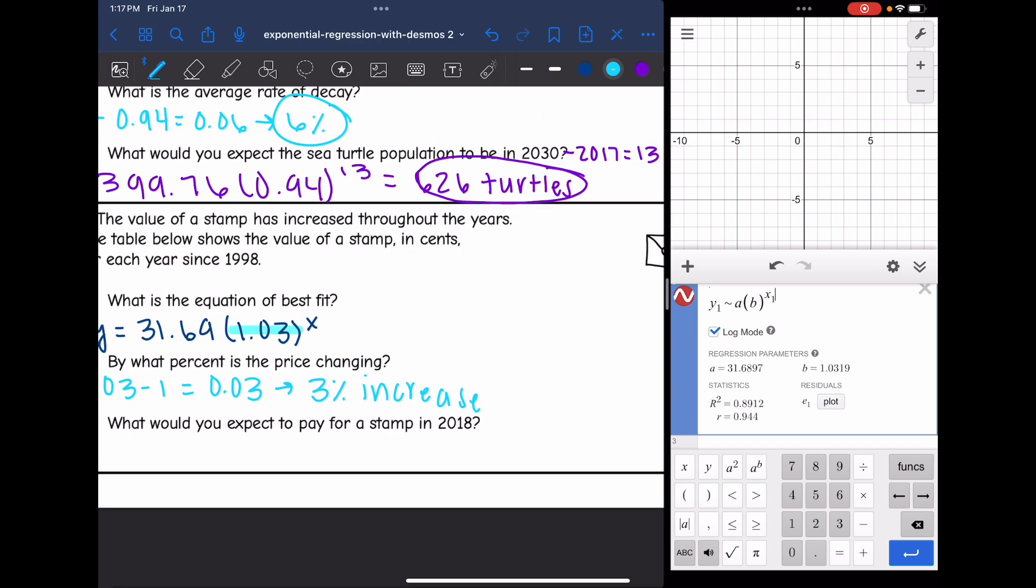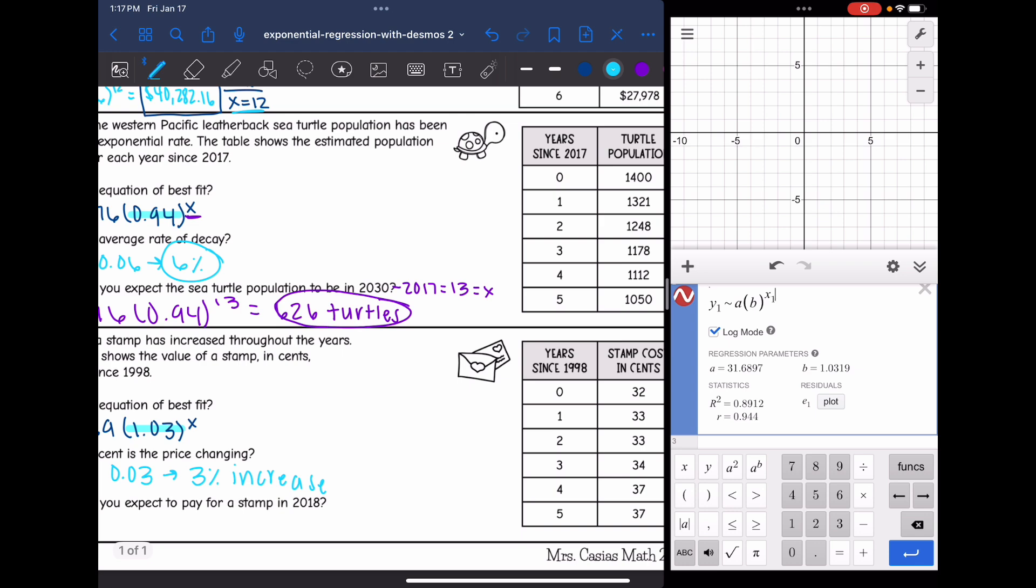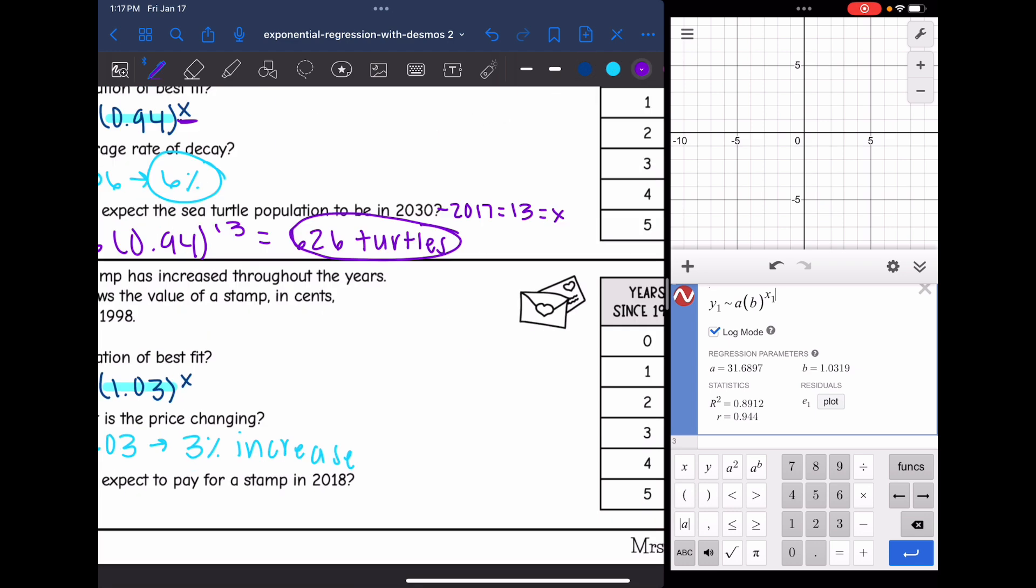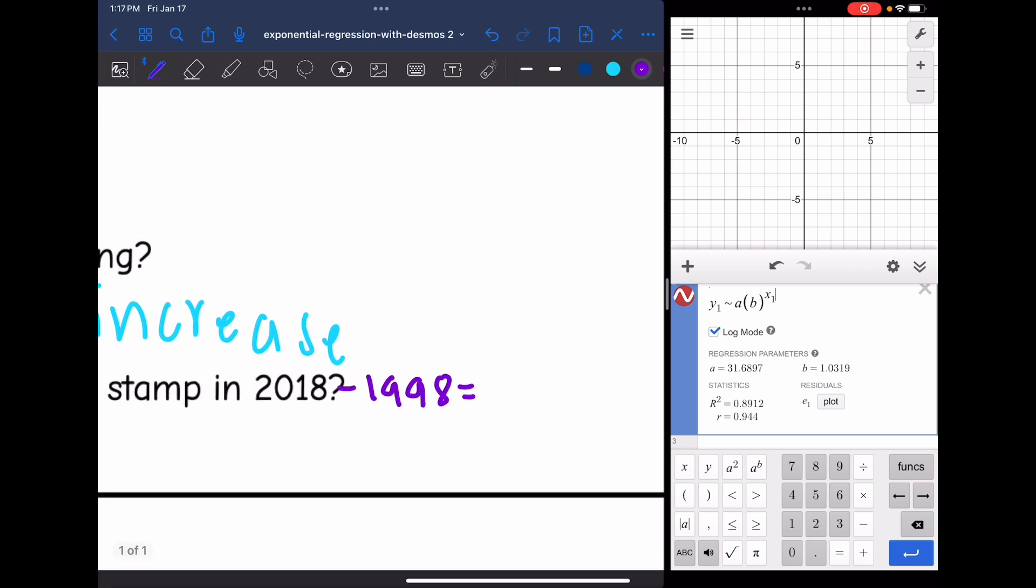And then the last question says, what would you expect the price of a stamp to be in 2018? So remember my X value is years since 1998. So I need to do 2018 minus 1998 to figure out what value to substitute in for X, which is 20.